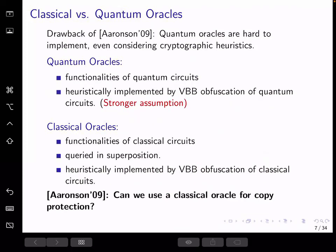One drawback of Arison's scheme is that quantum oracle is a strong assumption. Quantum oracles implement functionalities of quantum circuits, while classical oracles implement classical circuits.